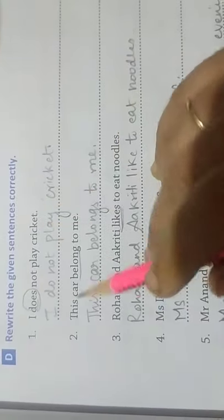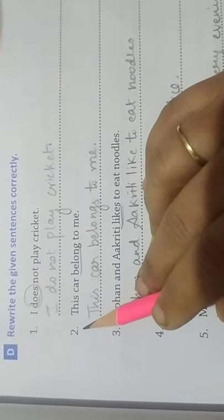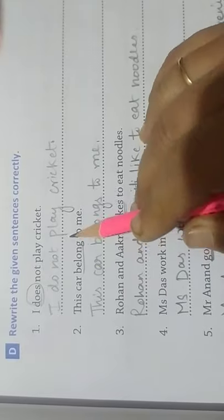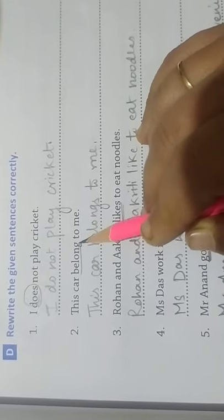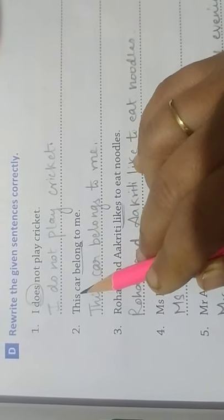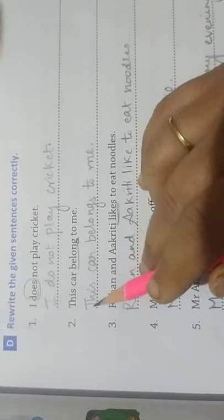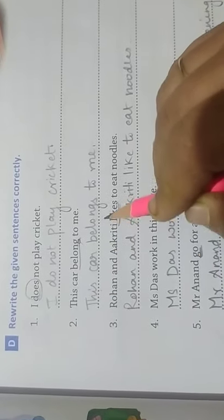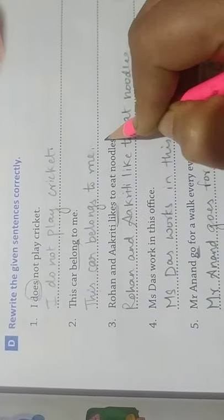Number two: The verb should be 'belong', not 'belongs' — it takes the 'does' form. So the correct sentence is: This car belongs to me.